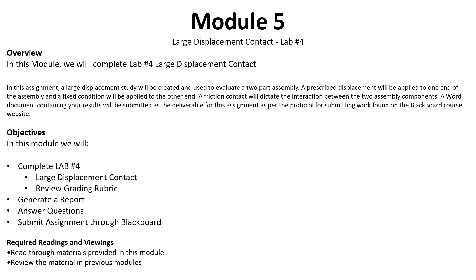For module five, we're discussing your fourth lab: large displacement contact. A large displacement study will be created and used to evaluate a two-part assembly. A prescribed displacement is going to be applied to one end of the assembly, whereas fixed conditions will be applied at the other end. A friction contact will dictate the interaction between the two assembly components. Once completed, you'll create a document — either Word or PDF — containing your results, submitted as your deliverable. This is the same thing you've done for your first three labs.